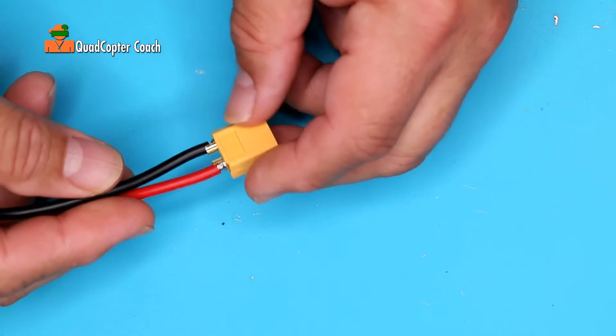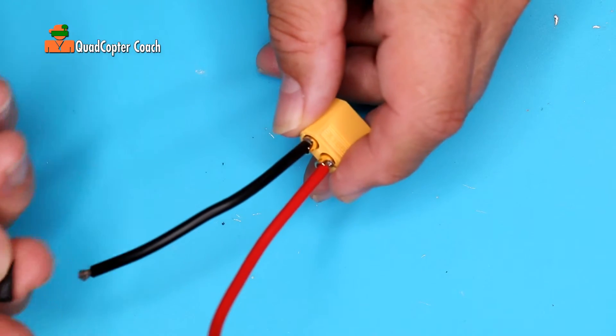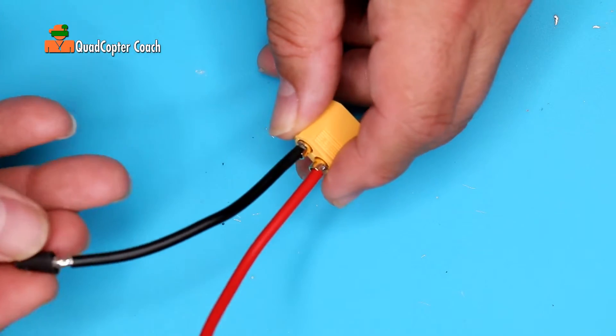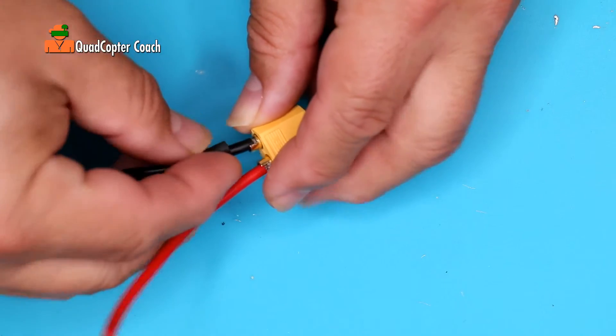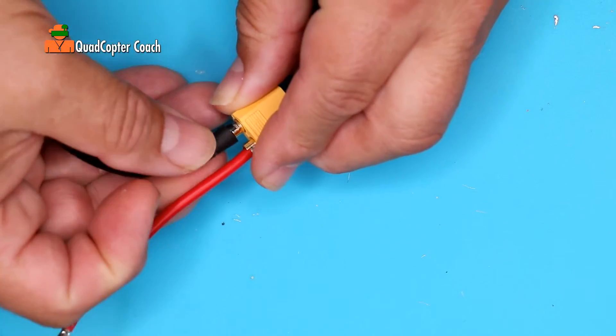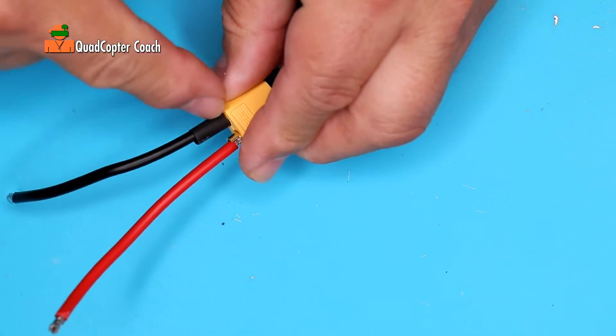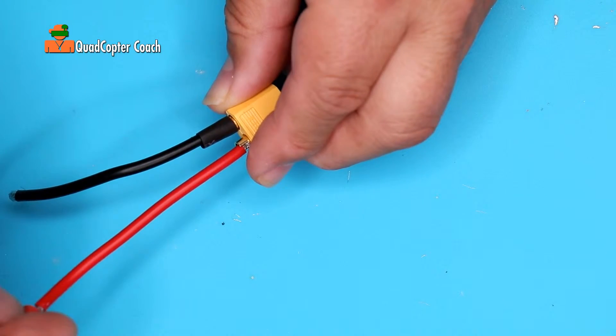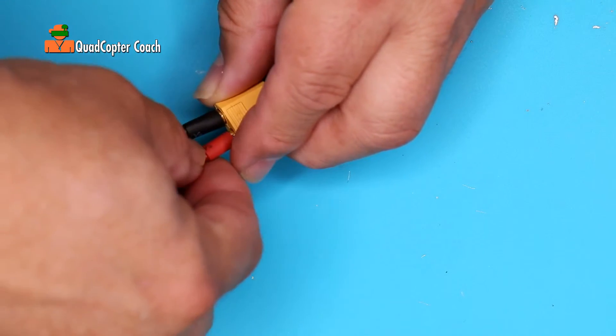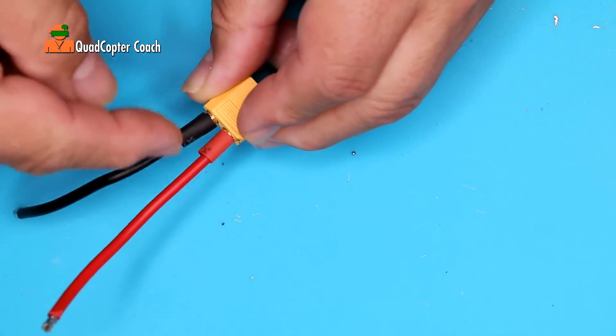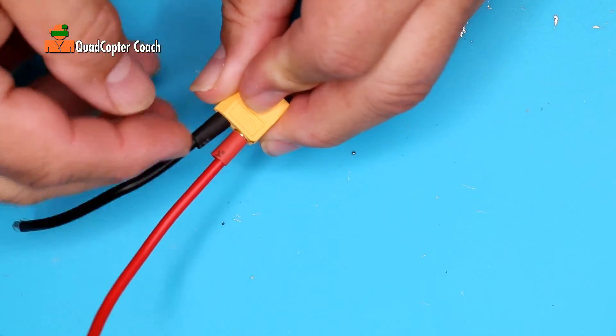Now that we have this all soldered up well, take the black shrink tube, slide it on the wire, and move it all the way down so it's all the way over the brass connector, flush down. Do the same with the red shrink tube, all the way down, totally covering those connectors.